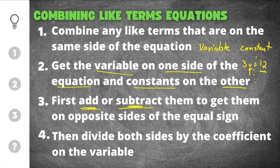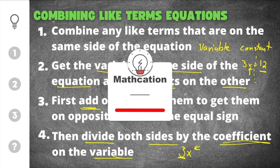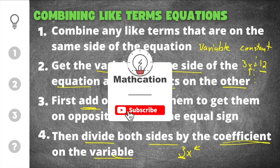After you do that, you will divide both sides by the coefficient on the variable. The coefficient is just the number in front of the variable in the term. So for 3x, 3 would be the coefficient and x is the variable. And if you're learning anything right now, don't forget to subscribe so you don't miss out on other helpful math videos.